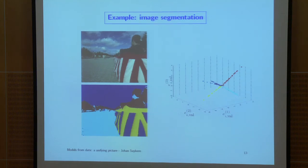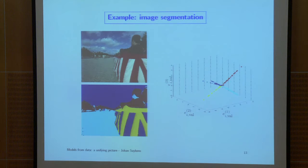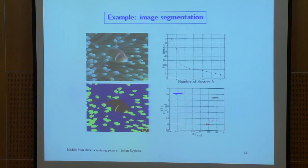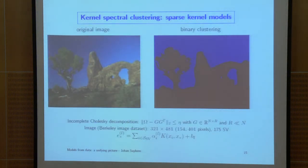Here is an example of image segmentation. The image on top is given; on the bottom you get the segmentation result. On the right is a model selection curve — you see straight lines, which is a good indication of a good clustering model. You evaluate this on validation data, giving an optimal clustering in the sense of optimal generalization with cross-validation. This can be based on line structures or on Fisher criteria.